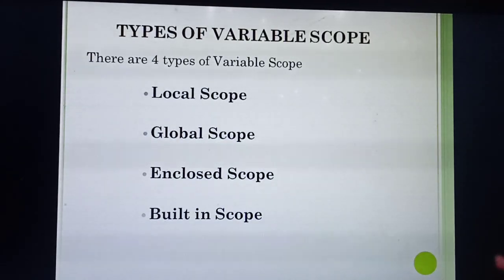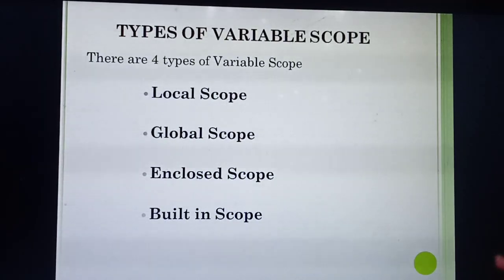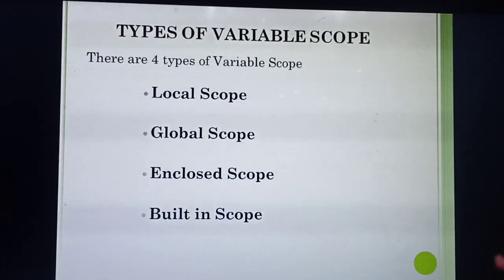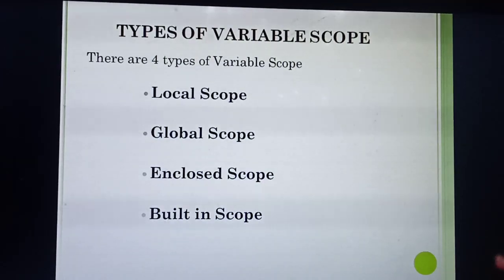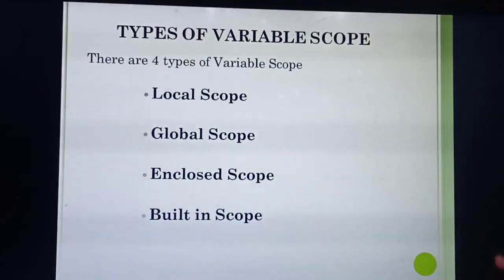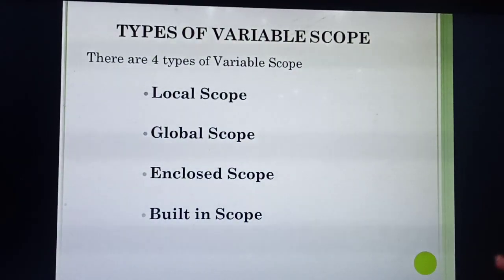There are totally 4 types of scopes. What are they? Local scope, global scope, enclosed scope, and built-in scope. If they ask for a 2-mark or 3-mark question, you need to write only these headings alone. For a 5-mark question, you need to write and explain in full.